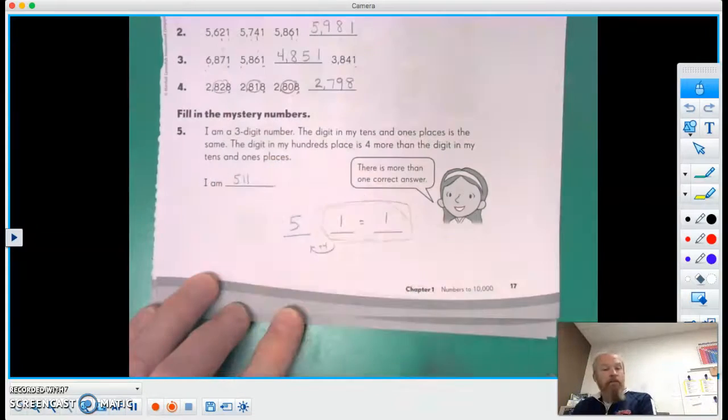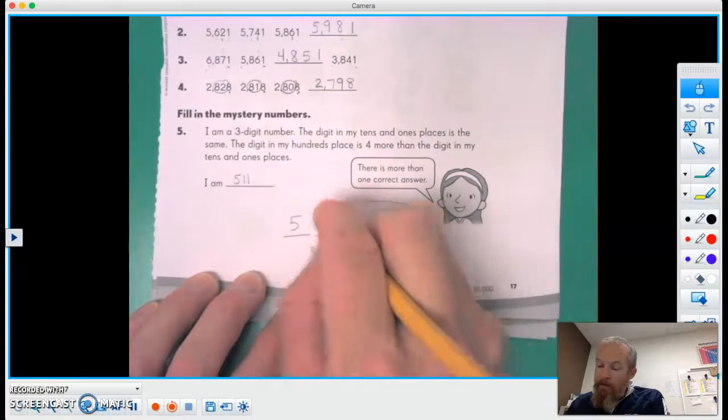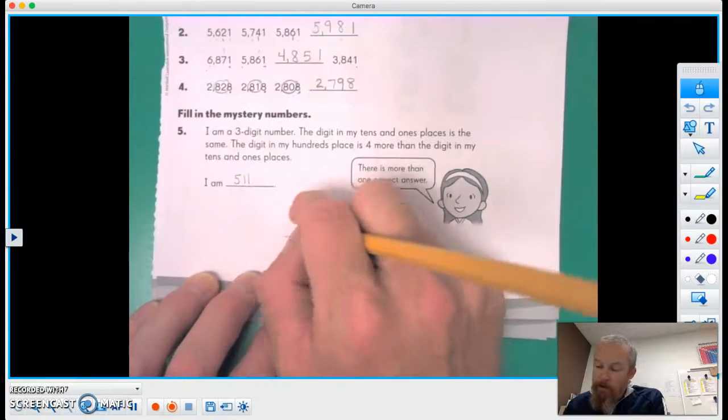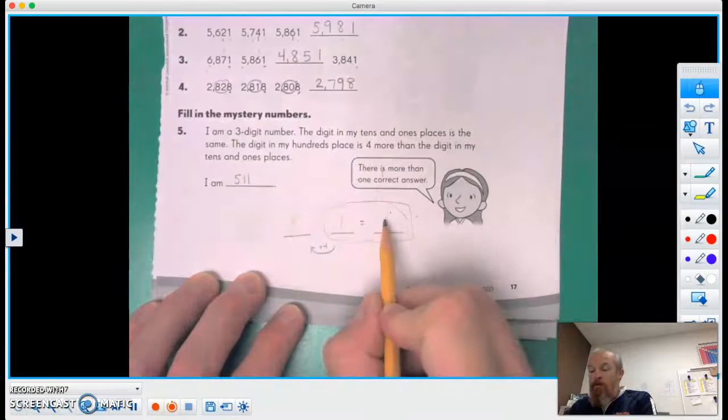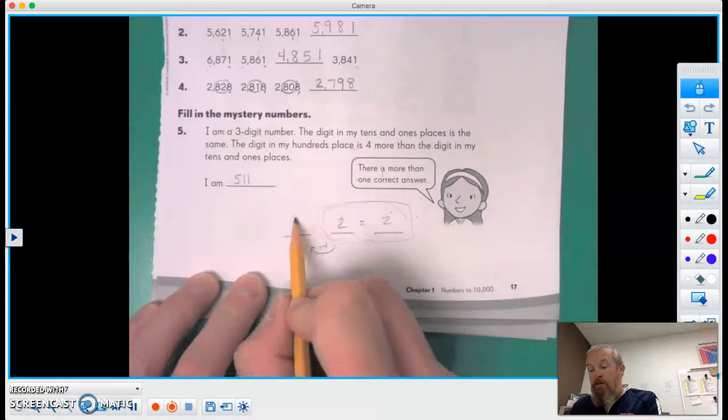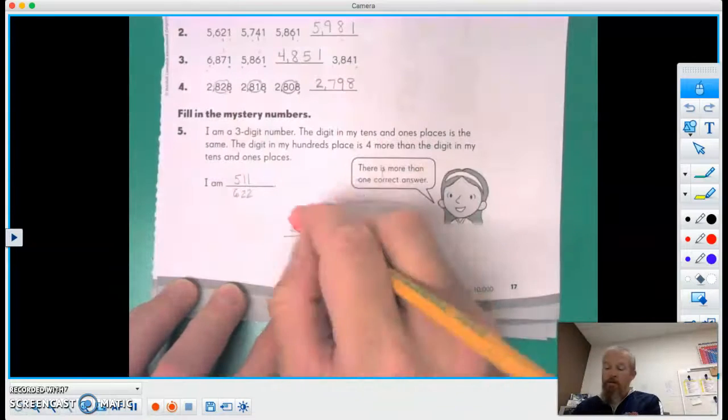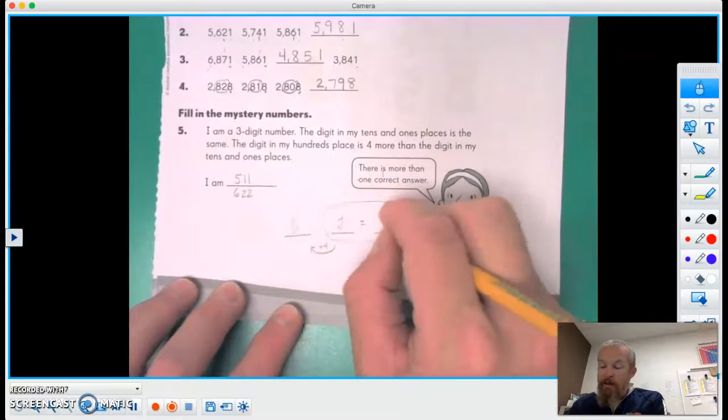So 511 should work. Now what if we put a two here? There has to be a two here. Two plus four is six. So we could have 622. Good.